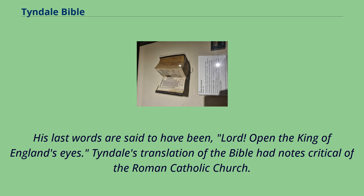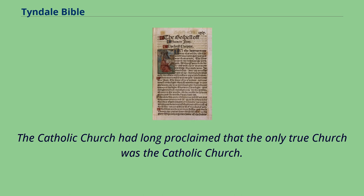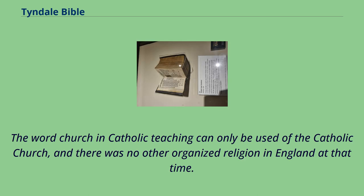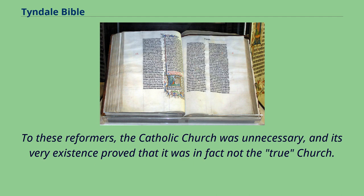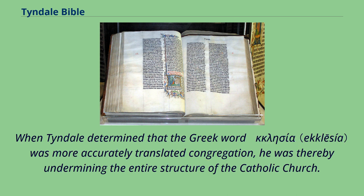Tyndale's translation of the Bible had notes critical of the Roman Catholic Church. The Catholic Church had long proclaimed that the only true church was the Catholic Church. The word church in Catholic teaching can only be used of the Catholic Church, and there was no other organized religion in England at that time. Some radical reformers preached that the true church was the invisible church — that the church is wherever true Christians meet together to preach the Word of God. To these reformers, the Catholic Church was unnecessary, and its very existence proved it was not the true church. When Tyndale determined that the Greek word 'ekklesia' was more accurately translated as congregation, he was thereby undermining the entire structure of the Catholic Church.